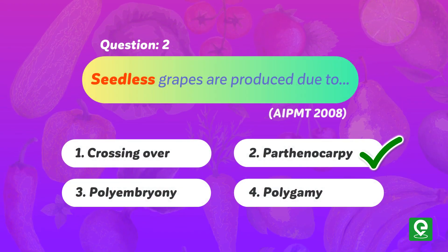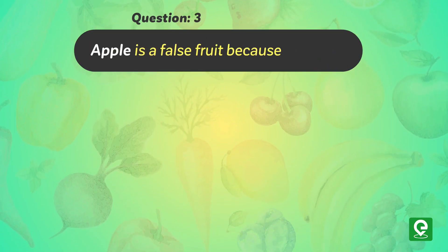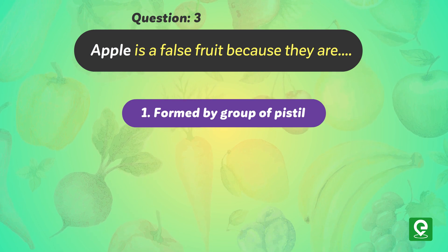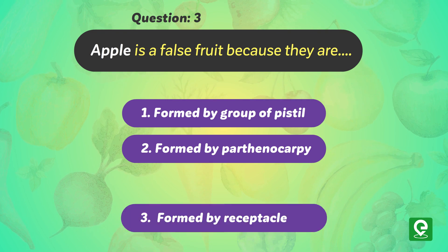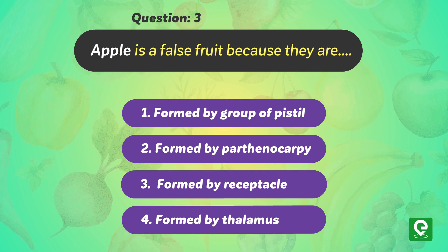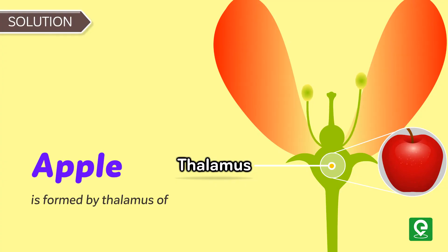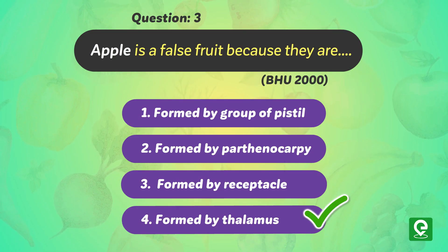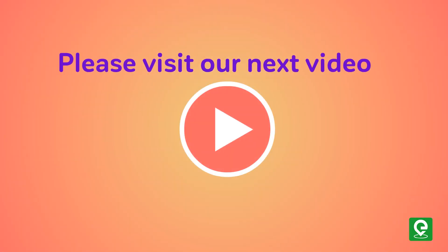Question three, asked in BHU 2000: Apple is a false fruit because it is — (1) formed by a group of pistils, (2) formed by parthenocarpy, (3) formed by receptacle, (4) formed by thalamus. Solution: Apple is formed by the thalamus of the plant, not by the ovary, so it is a false fruit. Hence option four is correct.